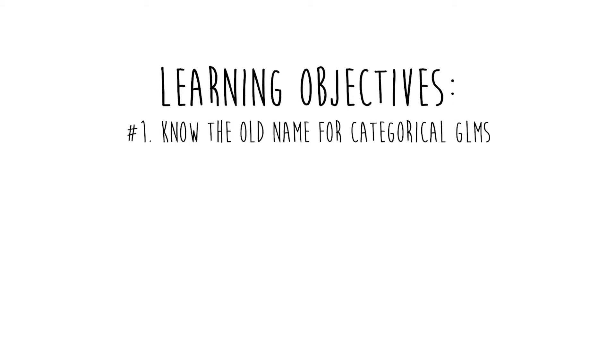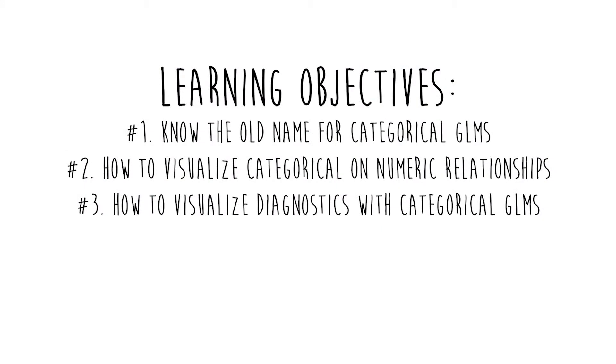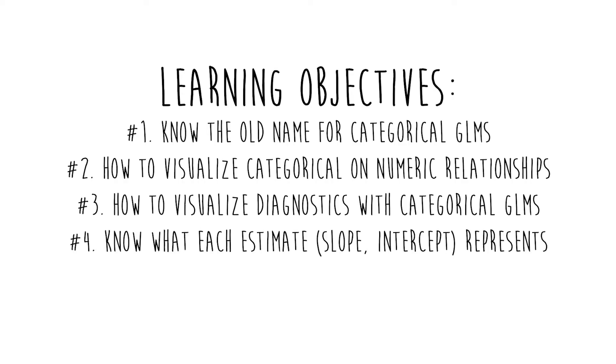Let's review our learning objectives. Number one: know the old name for categorical GLMs — in this case a t-test if you have exactly two groups. Number two: know how to visualize a categorical-on-numeric relationship using median dot plots. Number three: know how to assess assumptions and diagnostics using categorical GLMs. Number four: know what each estimate represents — the intercept is the mean of the referent group (chosen somewhat arbitrarily by statistical software), and the slope is the difference between the two groups. Cohen's D works the same as before. Finally, know what it means to zero-fy your data: converting a categorical variable into a numeric zero/one variable indicating which group each observation belongs to. Next time we'll talk about situations where you have three or more groups.